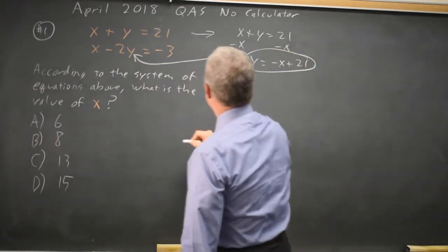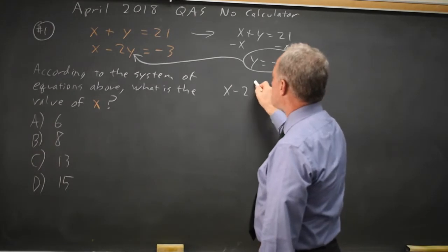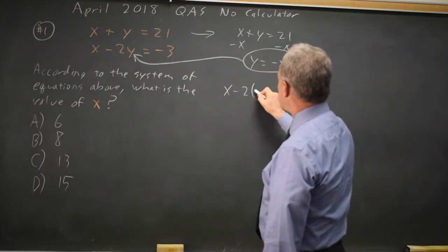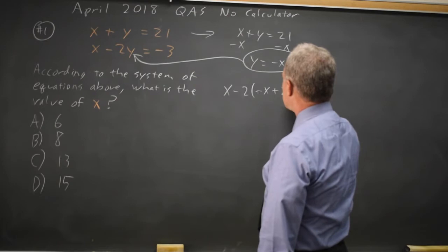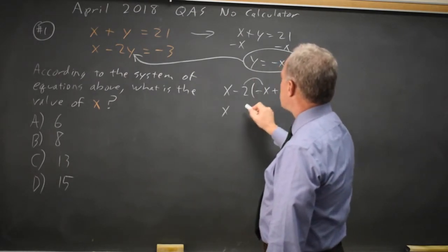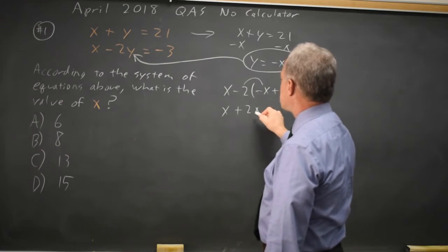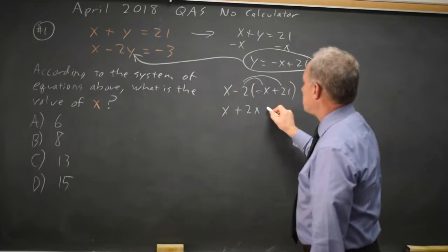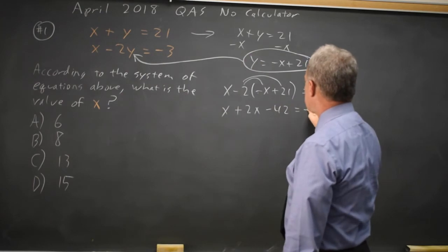Substitute that in for y here. So x minus twice y is minus twice negative x plus 21 equals negative 3. So that's x. Negative 2 times negative x is plus 2x. Negative 2 times 21 is minus 42 equals negative 3.